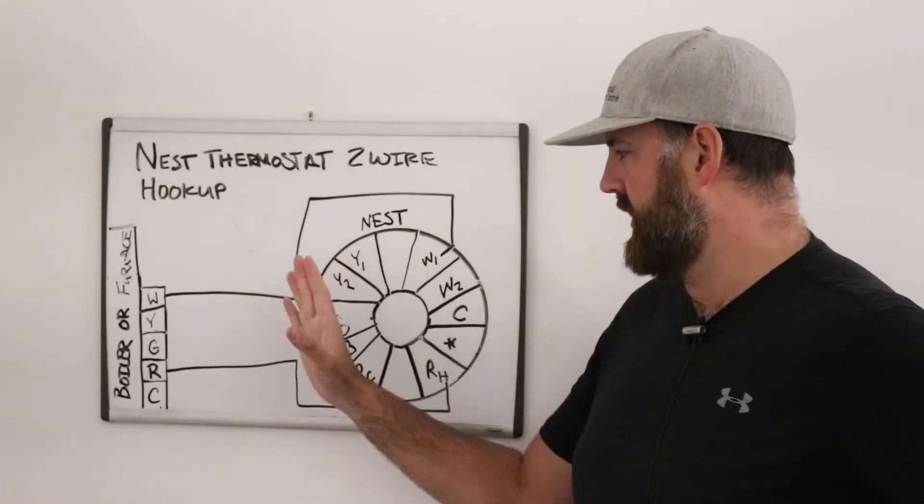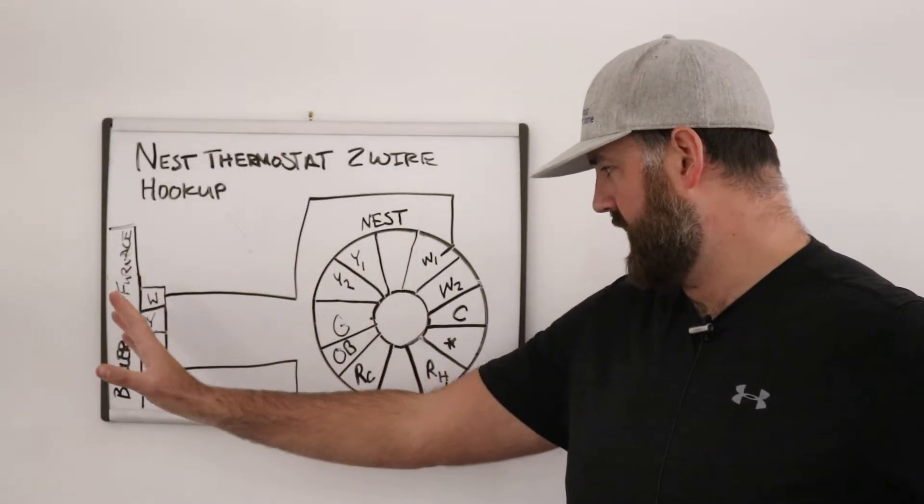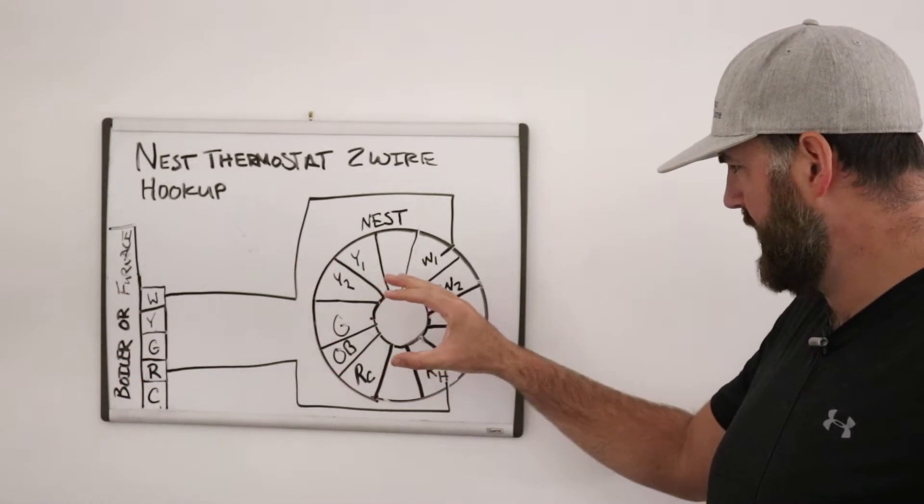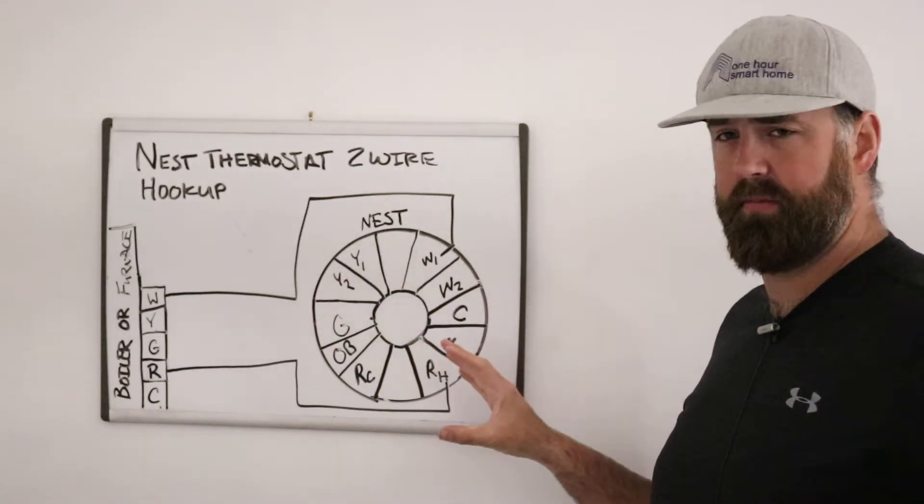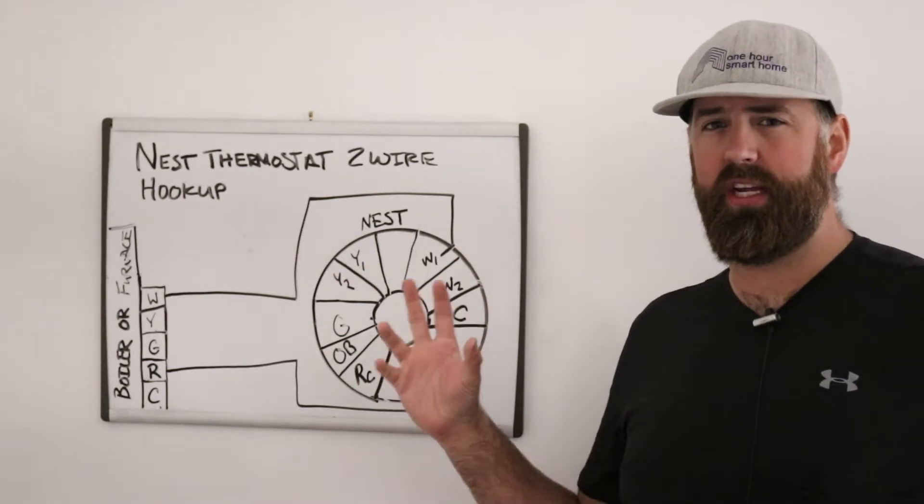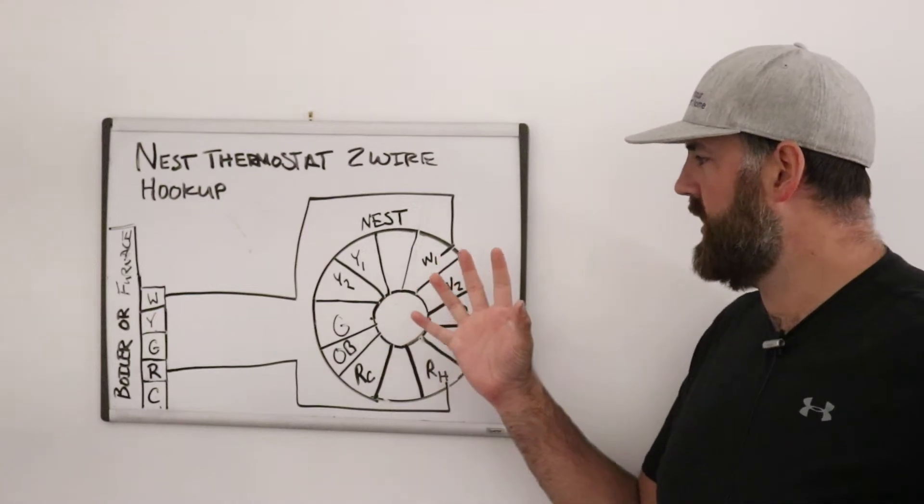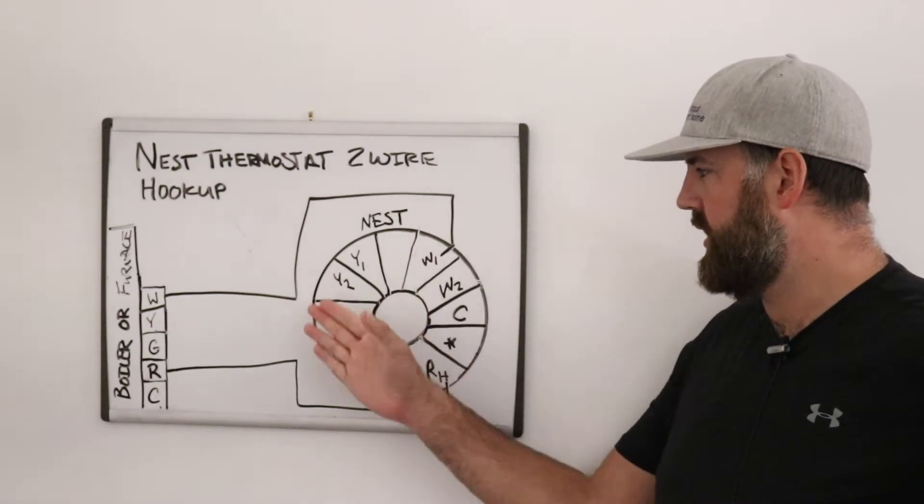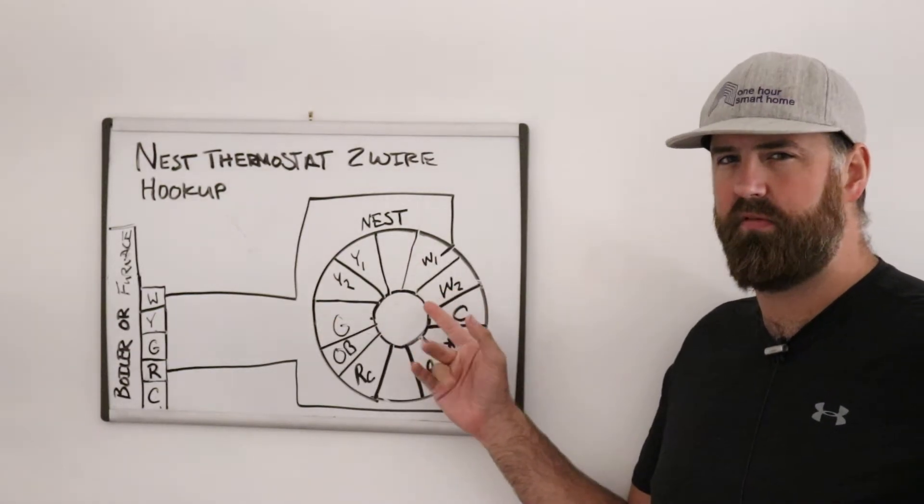So what we've got here is the boiler or furnace over here and a diagram of the Nest thermostat. If you were to take the front face plate of the Nest off, you're going to have a back plate and the back plate is going to have all these different items on it.